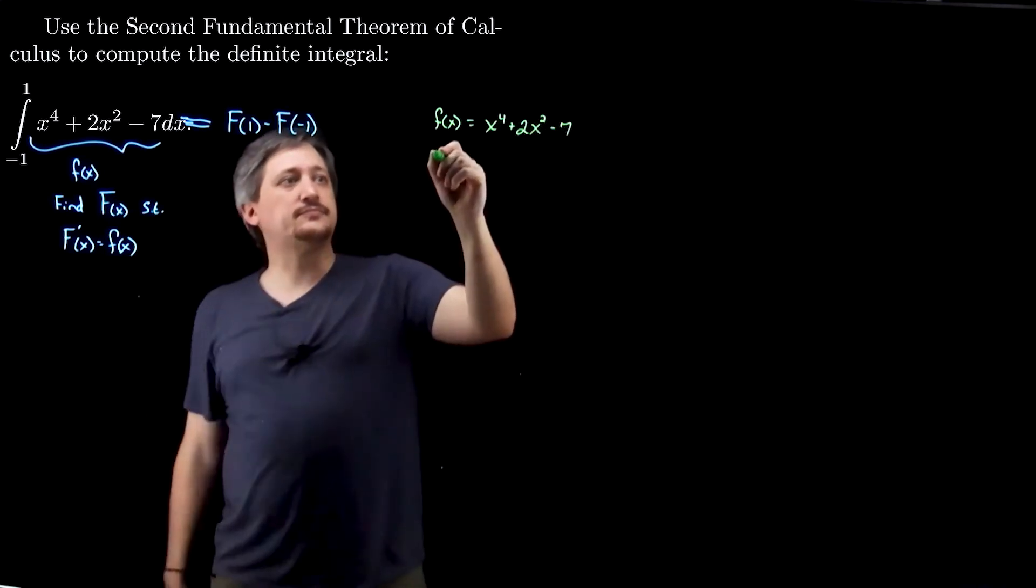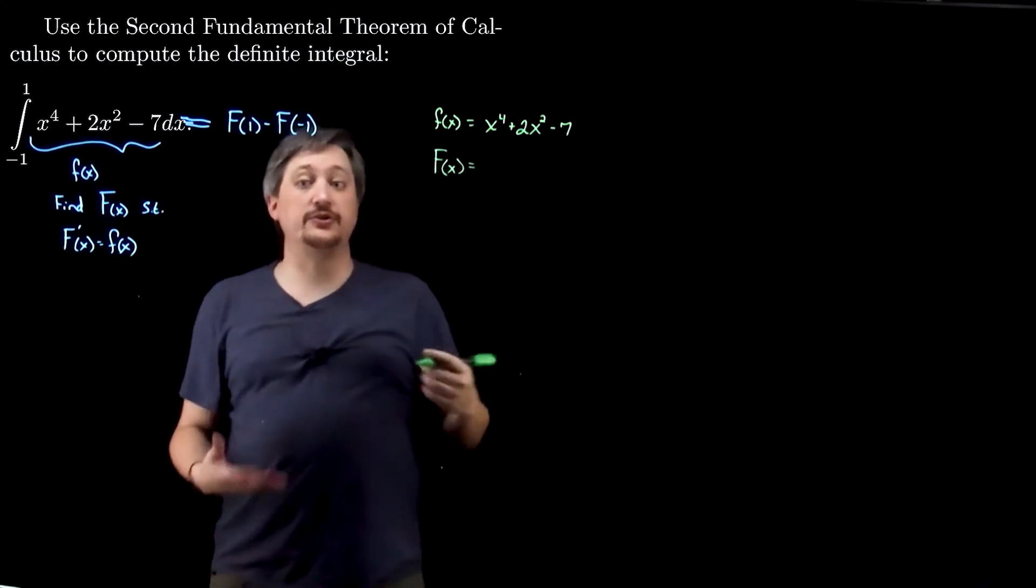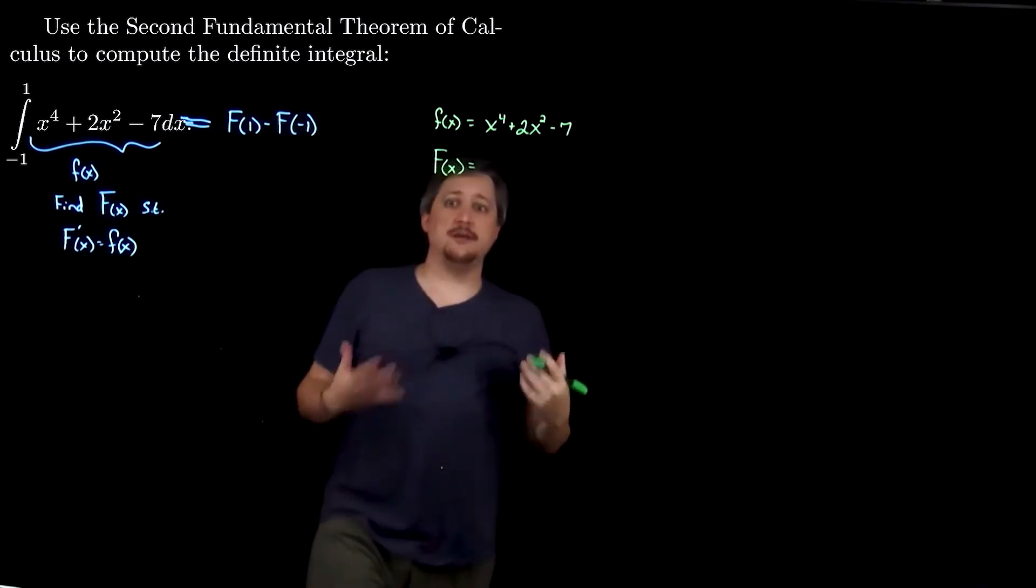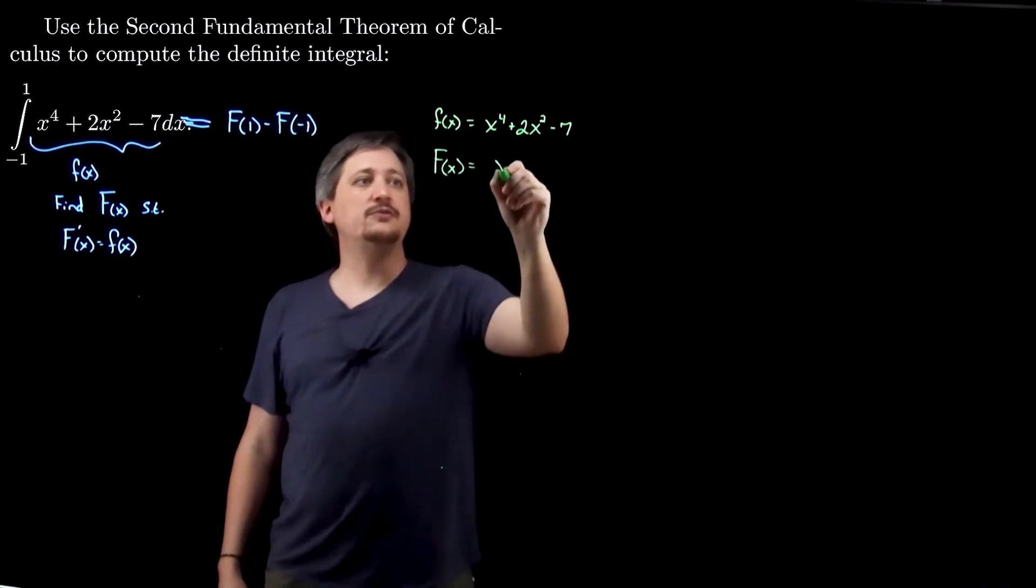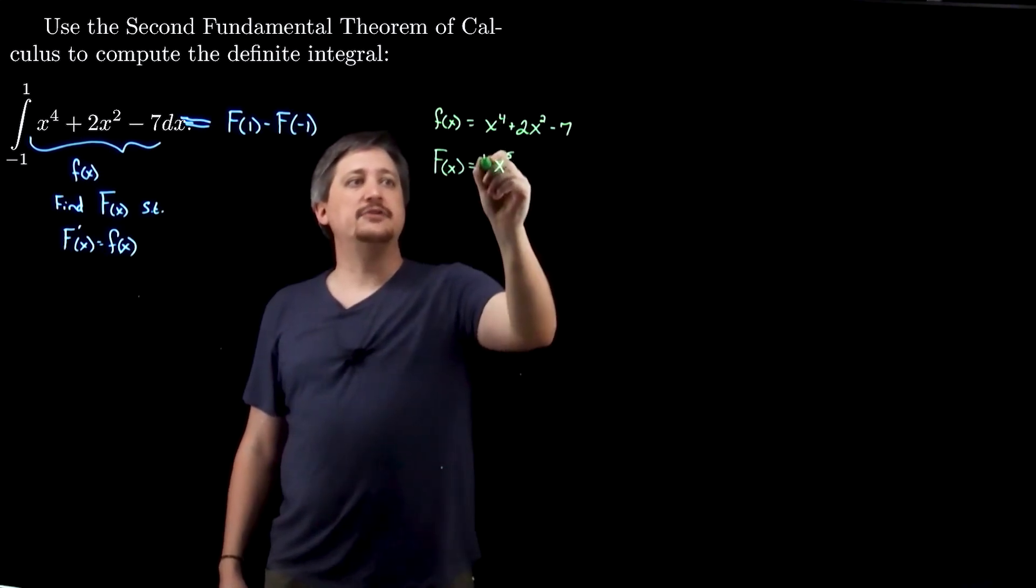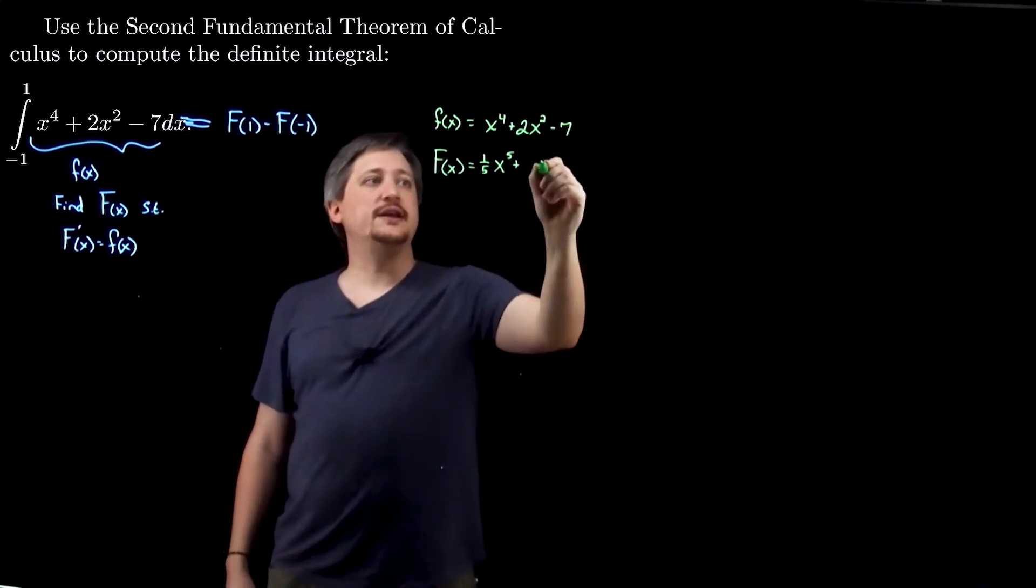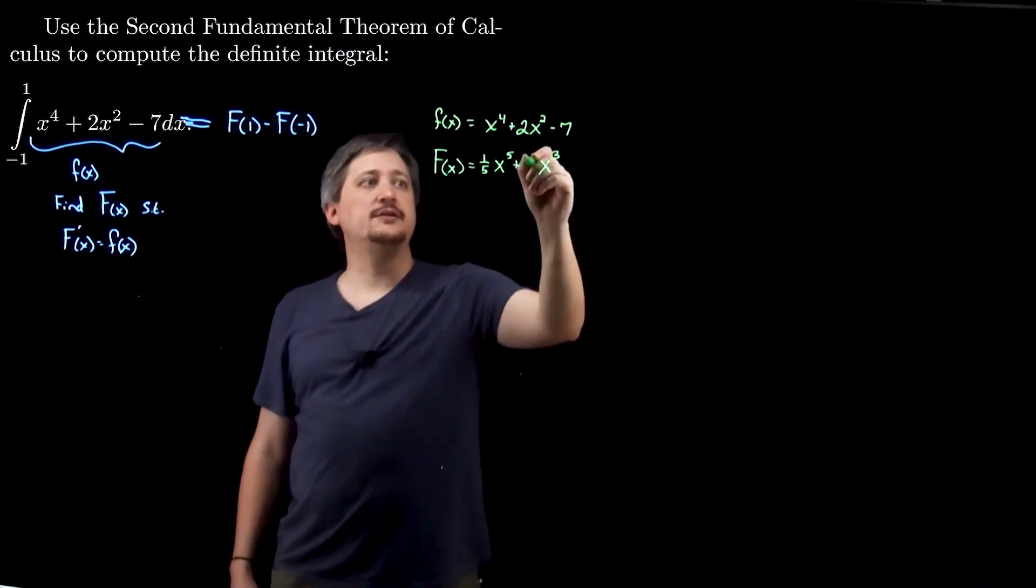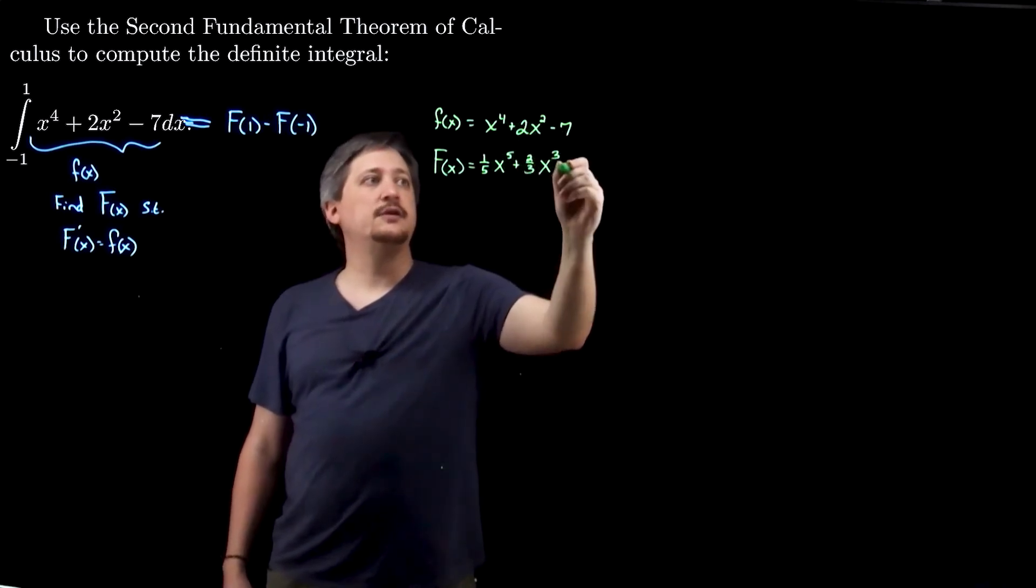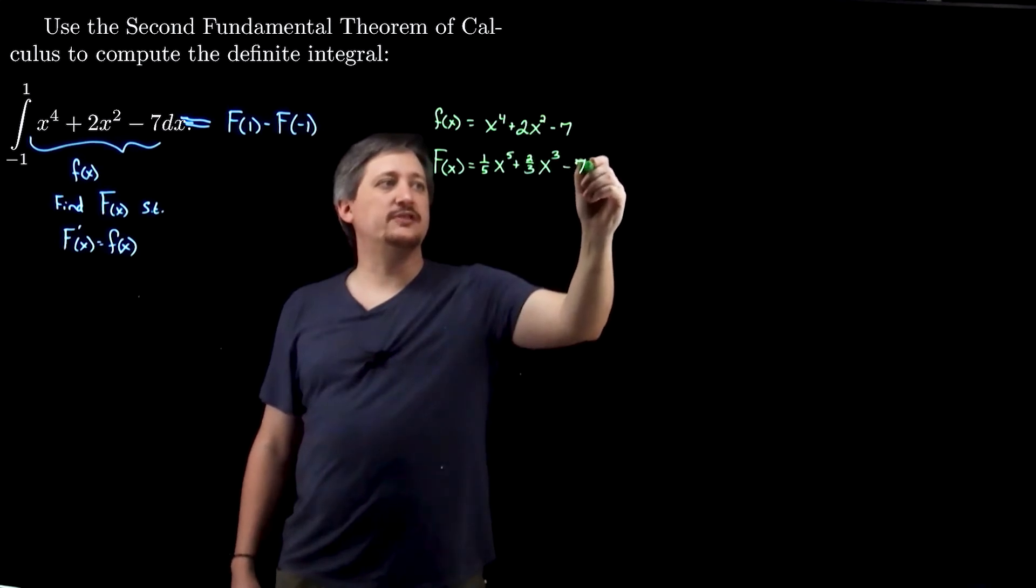So, then we want to find the antiderivative, right? So, the antiderivative, remember, for polynomials, we would just increase the power by 1 and then divide by that number. So, we get x to the fifth, but then divide by 5, so 1 fifth. Here, increase, so we get x cubed, but then we divide by 3 and we still have that 2 there, so we get 2 thirds. And here, it's really like an x to the zero, so we end up with just 7x.